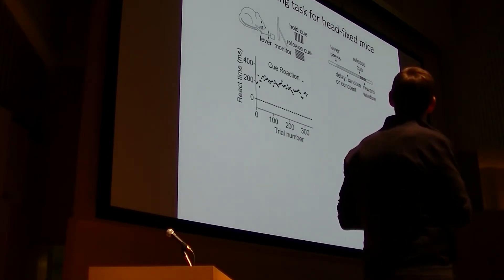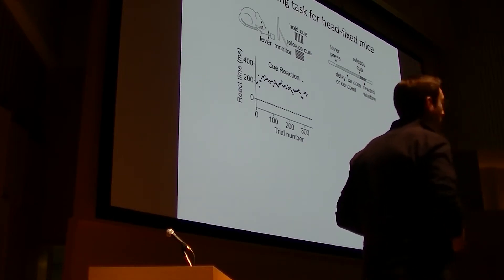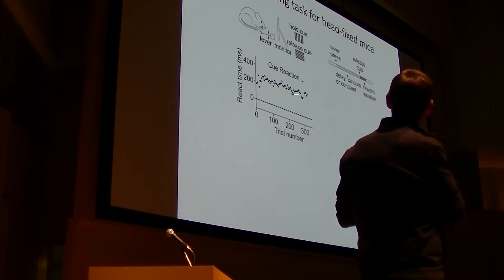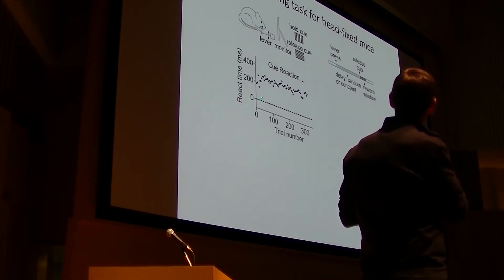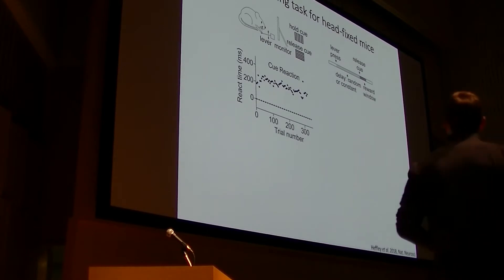And the task comes in two flavors. The first of which, we randomize the delay interval from when the animals push the lever to when the release cue instructs them to release the lever. And when we do this, we find that the animals adopt a reaction strategy whereby if we plot the time of lever release against the trial, aligned relative to the time when the cue changes orientation, you can see that there's this constant reaction time that simply reflects the amount of time necessary for sensorimotor integration.